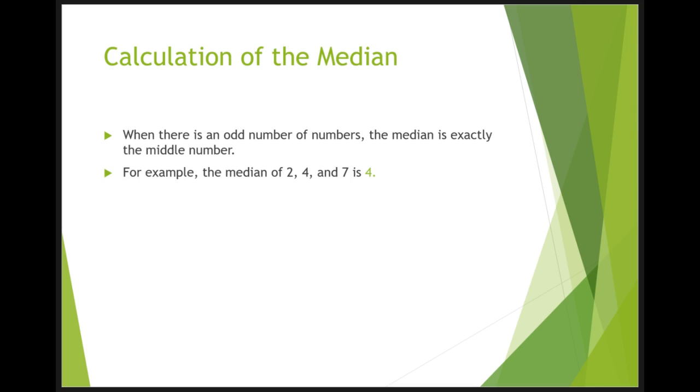The median is a relatively easy statistic to calculate. When there is an odd number of numbers in your distribution, the median is simply the middle number if you put the numbers in order from smallest to largest. For instance, the median of the numbers 2, 4, and 7 is 4.